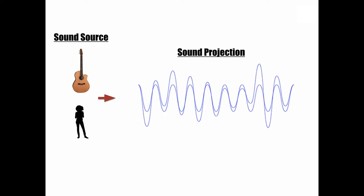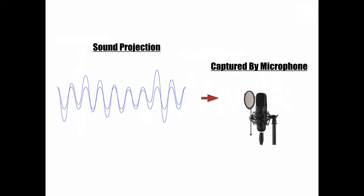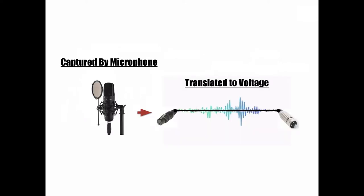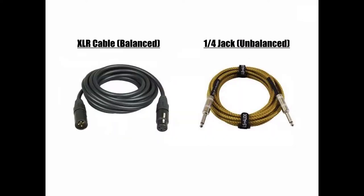How does this sound energy get recorded in today's modern systems? The sound is projected from a sound source and captured by a microphone. Microphones work in a variety of different ways. The three most common are dynamic microphones, condenser microphones, and ribbon microphones. These microphones translate the sound pressure from the sound source into a series of voltages that get transported through some type of cable. The most common cable that carries audio is the XLR, though audio can be transferred by multiple different cables, all of which present different qualities.